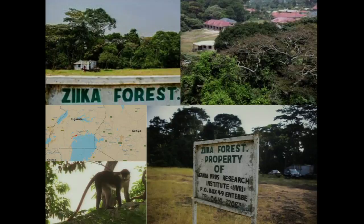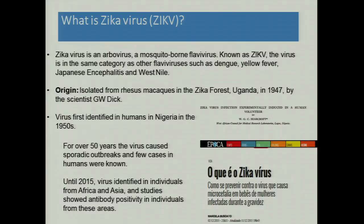This is the Zika forest in Uganda, about 30 kilometers south of Entebbe. In 1947, this virus was isolated from primates in this forest. I didn't know what Zika virus was until November, when I was in Brazil and all the newspapers started talking about Zika virus and microcephaly. People would ask, what is Zika virus? I said, well, I guess a mosquito transmits it. But we've done the homework.